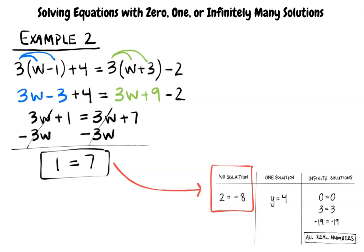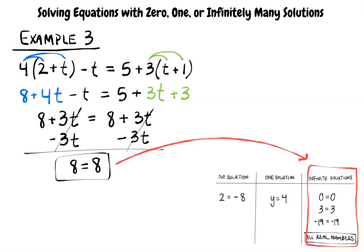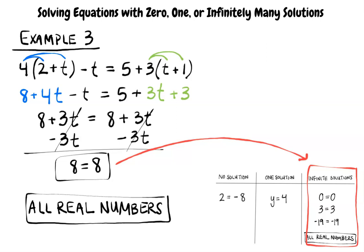Can I do the last problem? Of course. Here is the example. Distributing the 4 and the 3, I get the following expression. Now, I combine like terms. Doing so, I arrived at 8 plus 3t equals 8 plus 3t. If I now subtract 3t from both sides, I get 8 equals 8. This falls into the infinite solution category in which our answer is all real numbers.